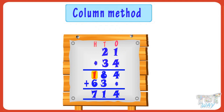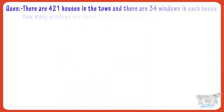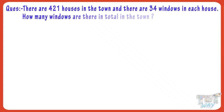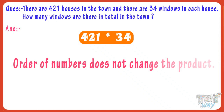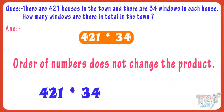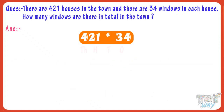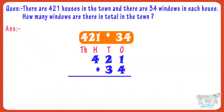We will see many examples for practice. There are 421 houses in the town and there are 34 windows in each house. How many windows are there in total in the town? We will multiply 421 by 34. Remember, order of numbers does not change the product — 421 multiplied by 34 equals 34 multiplied by 421. In any sum — addition, subtraction, or multiplication — we first align the numbers.